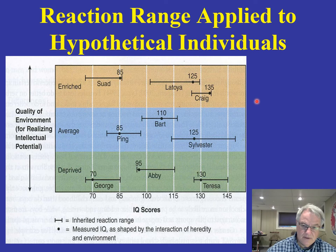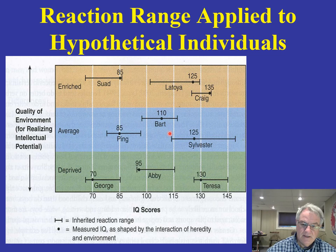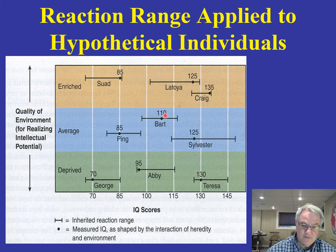In an average environment: one individual has an inherited reaction range of about 75–95 and a measured IQ of 85; Bart has a range of 96–117 and a measured IQ of 110; Sylvester has a range of 113–150 and a measured IQ of 125. They're all in an average environment with different reaction ranges, but when we measure their IQs, they tend to be in the middle of their inherited reaction range.